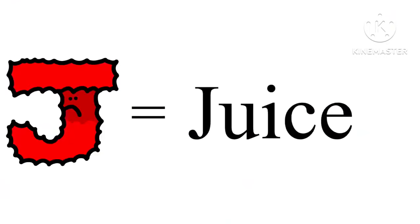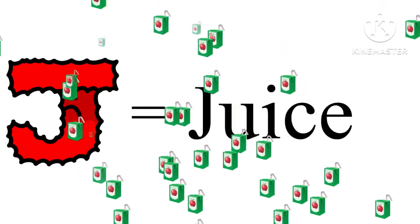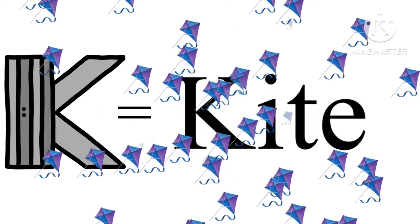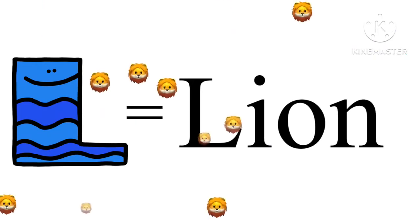J is for Juice. K is for Kite. L is for Lion.